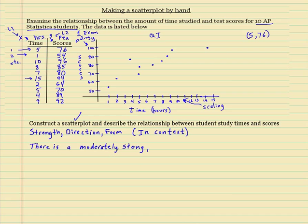Next, direction. As time goes up, what's going on with the scores? As explanatory increases, what's happening with the y? Well as time increases, the scores also increase, so that would be considered positive. There is a moderately strong positive.